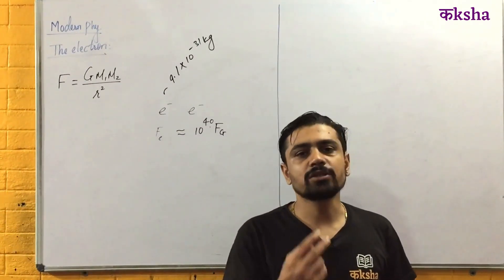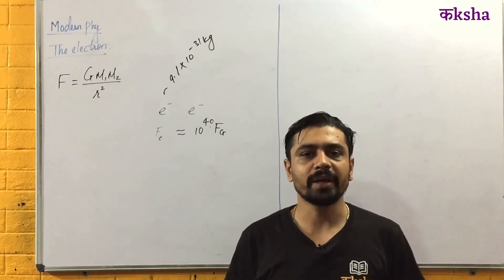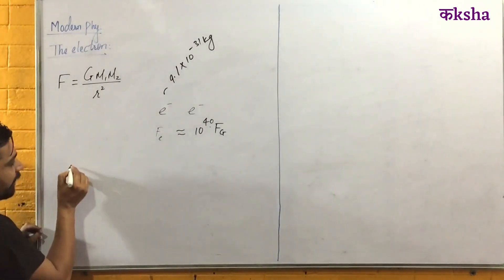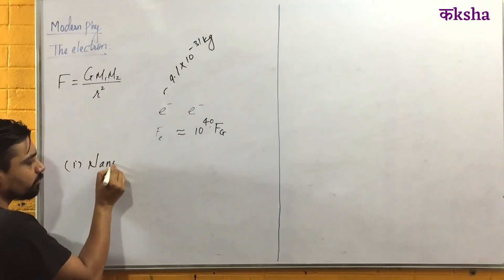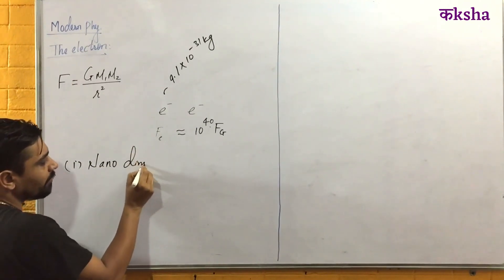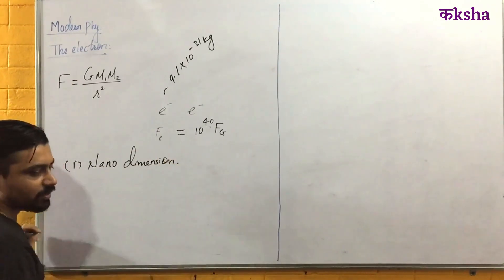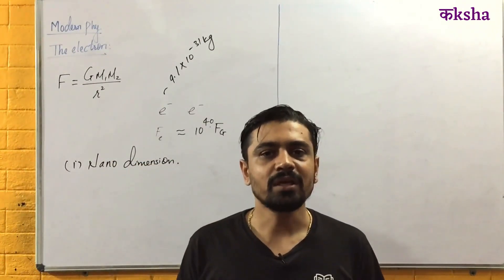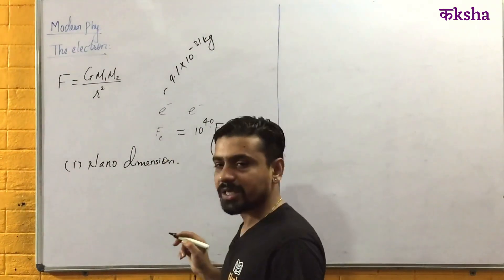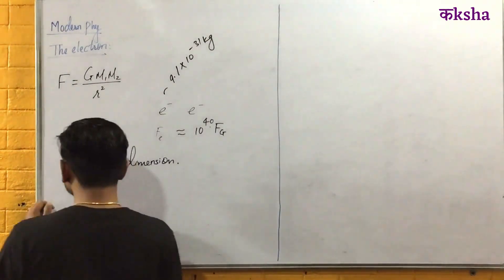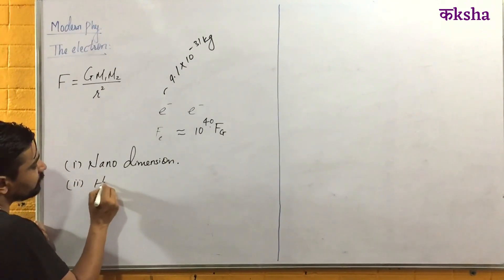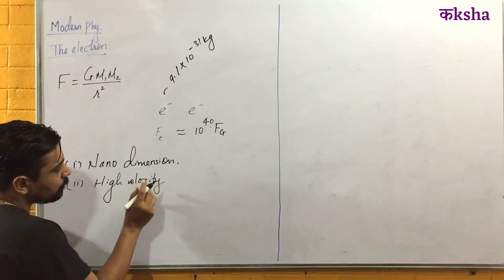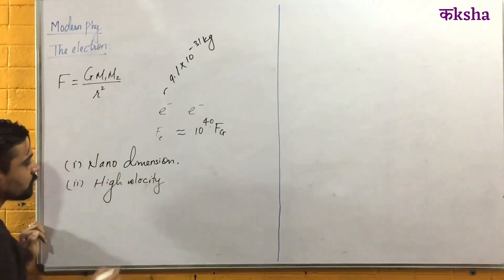Newtonian mechanics fails in two aspects. At the nanoscale, on the order of 10 to the power of minus 9 meters, Newtonian mechanics cannot give precise results. And in the case of high velocity, Newtonian mechanics is failing.